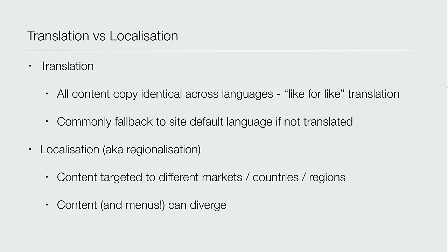I want to briefly talk about the difference between translation and localization - it will become important later and really caused me a lot of pain. Translation in my head is: you have content in English and you want the exact same thing just translated word for word into French. If you have a view returning latest news articles in the current language, it returns them all in French. But if it finds a node not translated into French, the normal process is to return the English version - the master copy or source. That's pretty much okay by and large, as long as you're not using paragraphs.